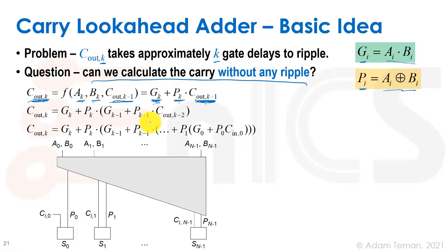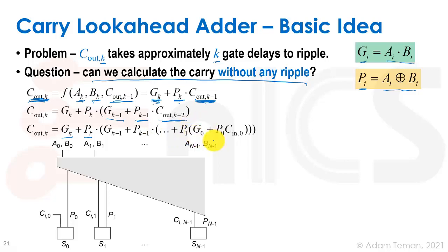Since we wrote it that way, we can recursively substitute c_out(k−1) = g(k−1) + p(k−1)·c_out(k−2), and keep expanding until we reach c_in(0), which is known at time zero. We end up with a large equation: c_out(k) = g(k) + p(k)·g(k−1) + p(k)·p(k−1)·g(k−2) + … + p(k)·…·p(0)·c_in(0). This expresses the carry without waiting for any ripple.